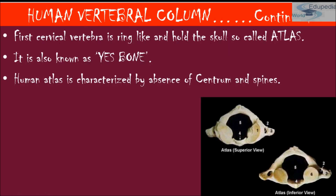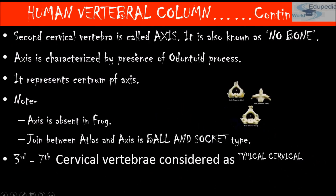The first cervical vertebra is ring-like and holds the skull, so it is called the atlas — also known as the 'yes bone.' The second cervical vertebra is known as the axis — also called the 'no bone.' The joint between atlas and axis is a ball and socket joint. Note that the axis is absent in frogs.